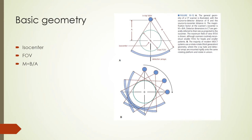The basic geometry of the CT scanner shows the ISO center as the center of rotation. Images are reconstructed at the ISO center on a 512 by 512 matrix. Because of the fan beam geometry, the maximum field of view is defined by the maximum extent of the detectors. As in radiographic imaging, there is a magnification factor from ISO center to the detector location given by M equals B divided by A, which is accounted for in reconstruction.